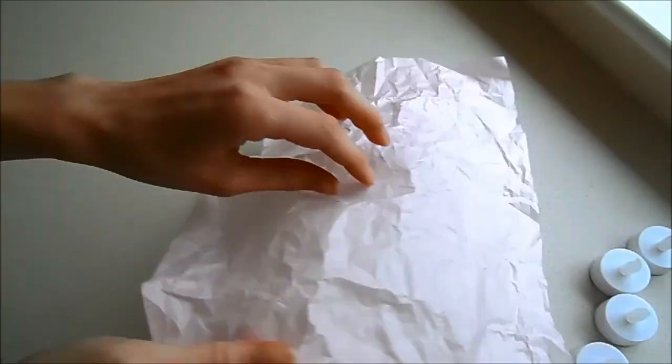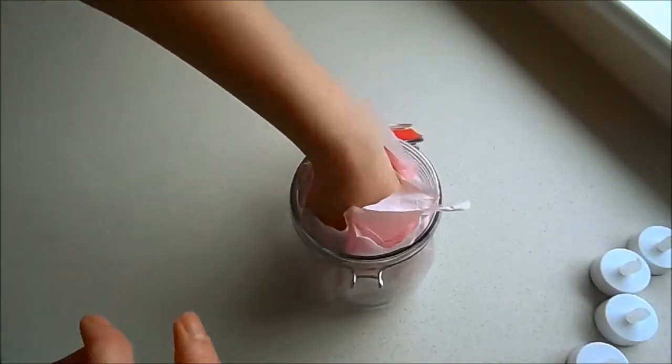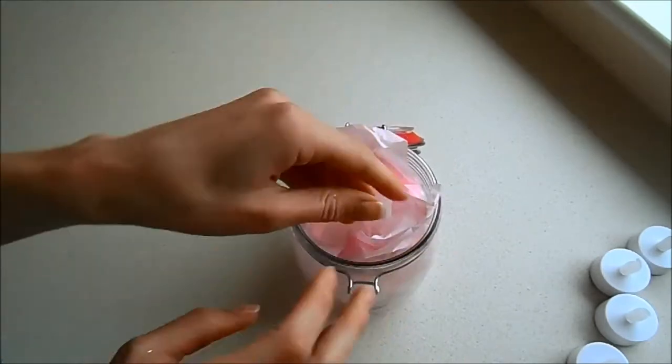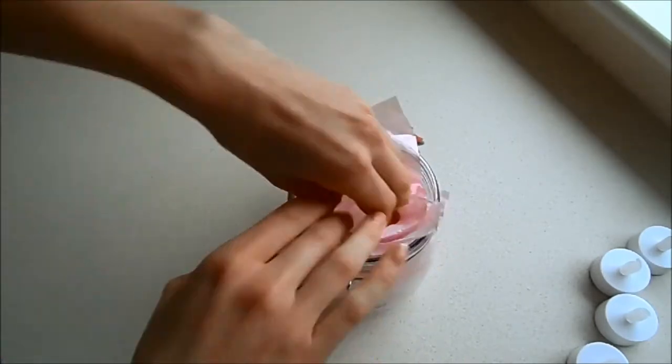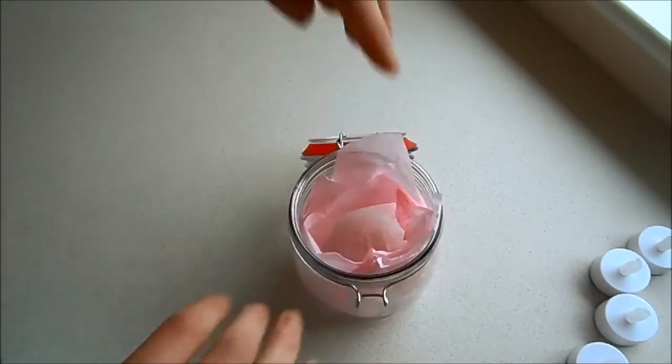You open your jar up, you pop your tissue paper in, scrunch it right down with your fist to the bottom. This is a point where if you want to sellotape it you can, if you want to cut some off you can.